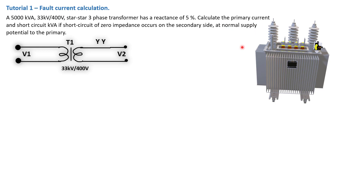We need to calculate the primary current, the short circuit current, and the short circuit KVA on the primary side — if a short circuit of zero impedance occurs on the secondary side at normal supply potential on the primary, which is 33 kV. So we're looking at a short circuit occurring on the secondary at V2.